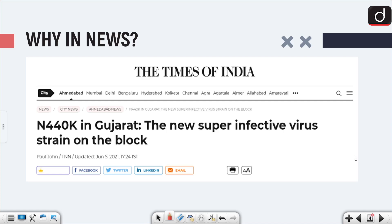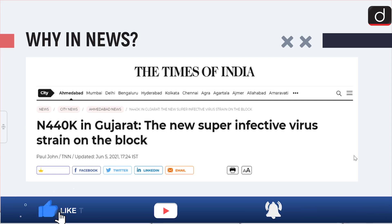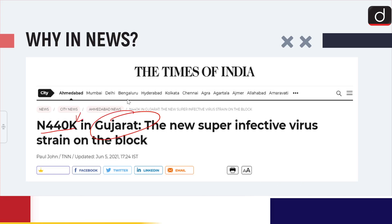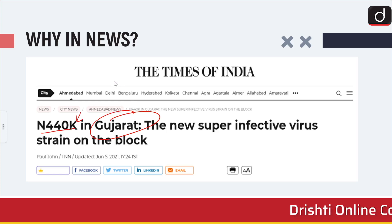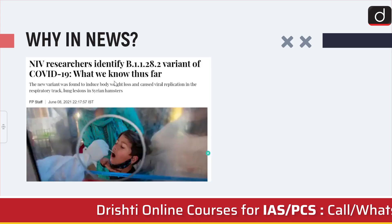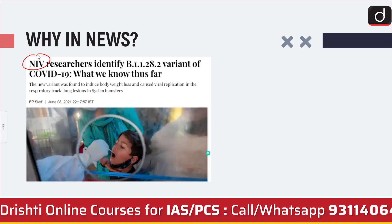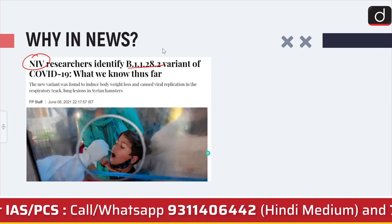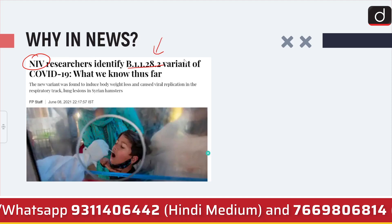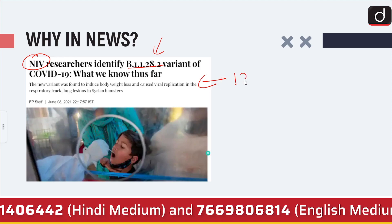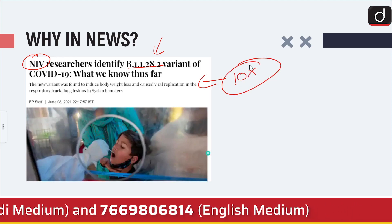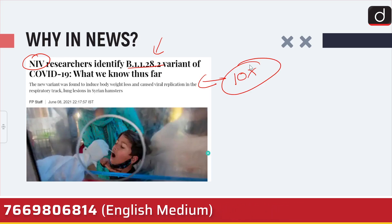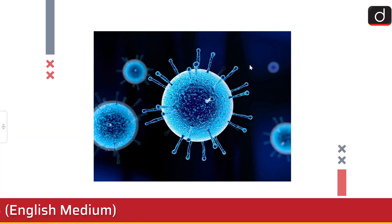It is in the news because two new variants have been found lurking. The first one being N440K that was found in Gujarat in January, and Gujarat is still a hub for this variant. The second one, B11282, has been discovered by the National Institute of Virology. These two new variants have been termed super infectious. This particular variant is 10 times more infectious than the Delta virus which caused a recent surge in COVID-19 infections and deaths.